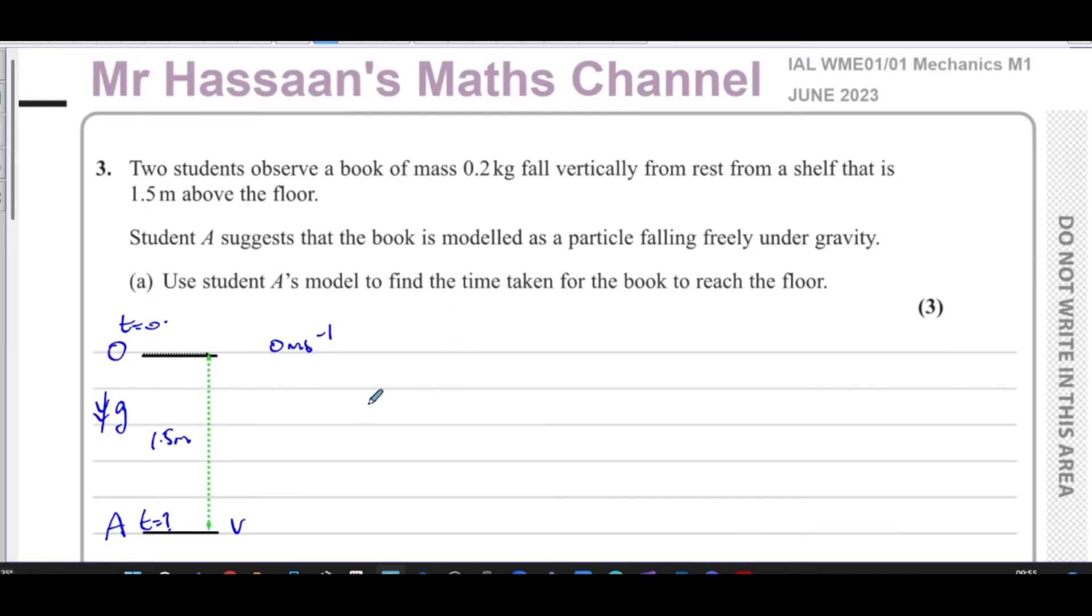So now what we can do here is we also know the mass of the object is 0.2 kilograms. But because we have no air resistance or anything else like that, we don't have to worry about the mass in this case. We're going to just straight away use the Suvat equations. And let's see, we have to find the time, so we need this. We know the displacement.